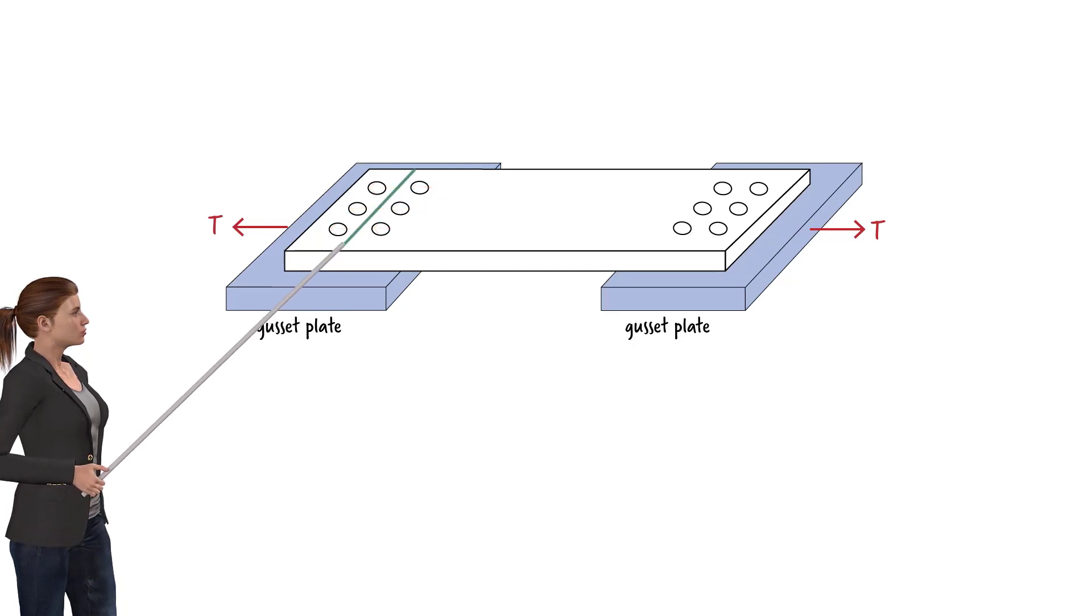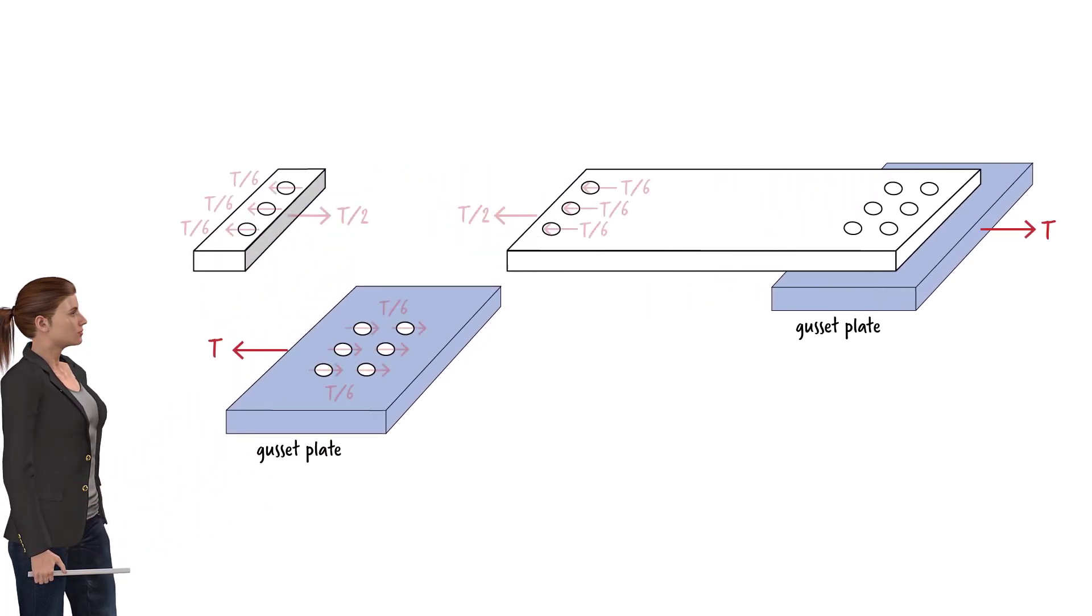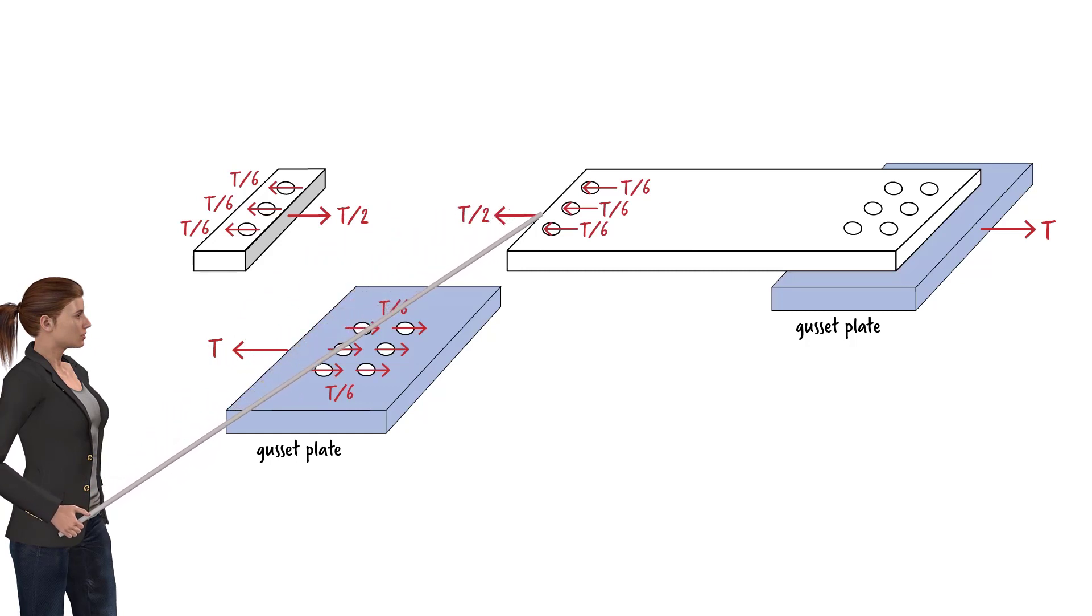If we cut the tension member along this line, we end up with this free body diagram. Here we can see that the cross section of the member is subjected to an axial force of T over 2, since half of the load has already been transferred to the gusset plate by these bolts.